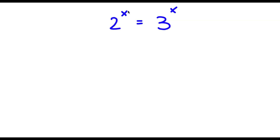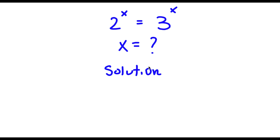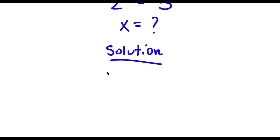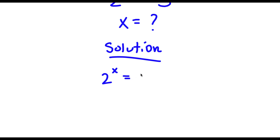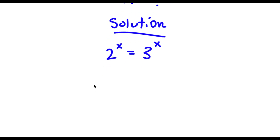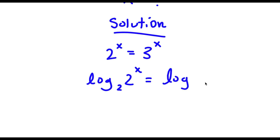Alright, so now I have 2 to the power of x is equal to 3 to the power of x, and I want to find the value of x. I'm going to take the log base 2 on both sides. So I have log base 2 of 2 to the power of x is equal to log base 2 of 3 to the power of x.